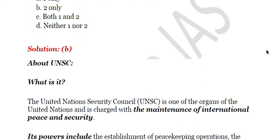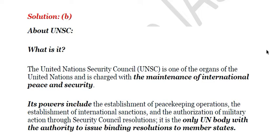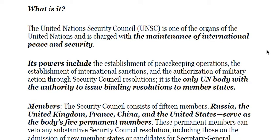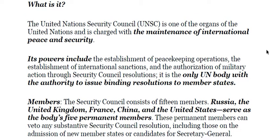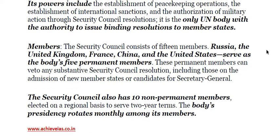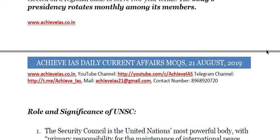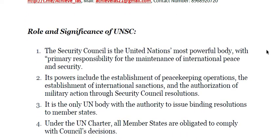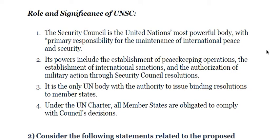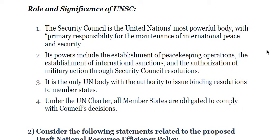The UN Security Council is tasked with maintaining international peace and security. It is the only UN body with the authority to issue binding resolutions to member states. The five permanent members are Russia, UK, France, China, and the United States. It also has 10 non-permanent members, and the presidency rotates monthly among its members. It can also establish sanctions, peacekeeping operations, or military action through Security Council resolutions.